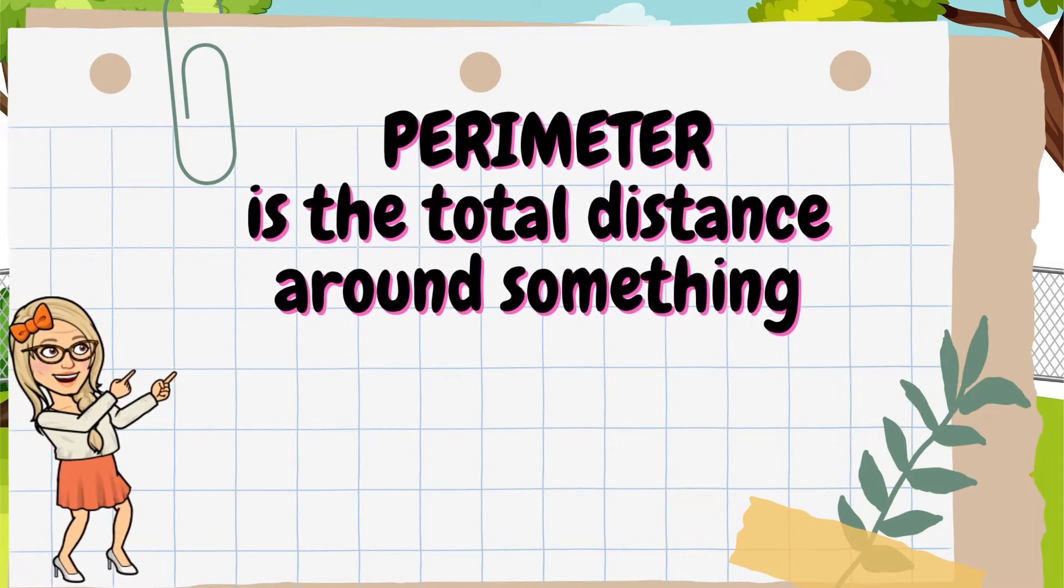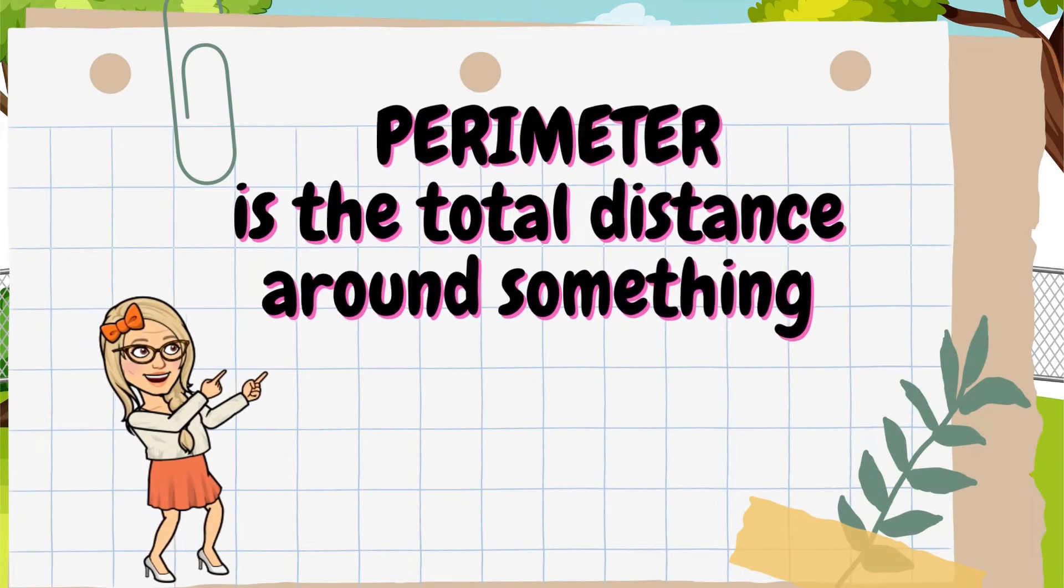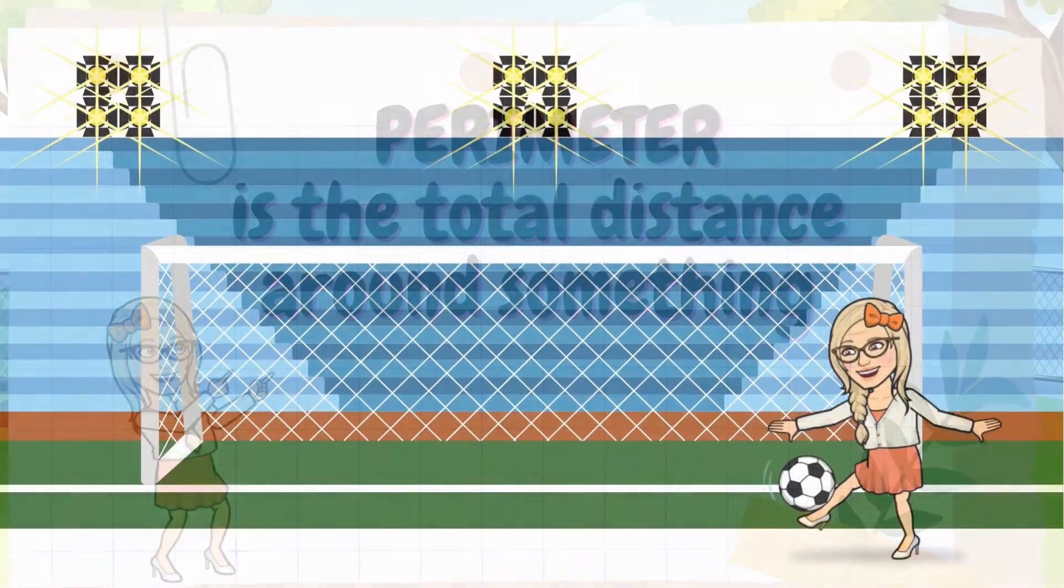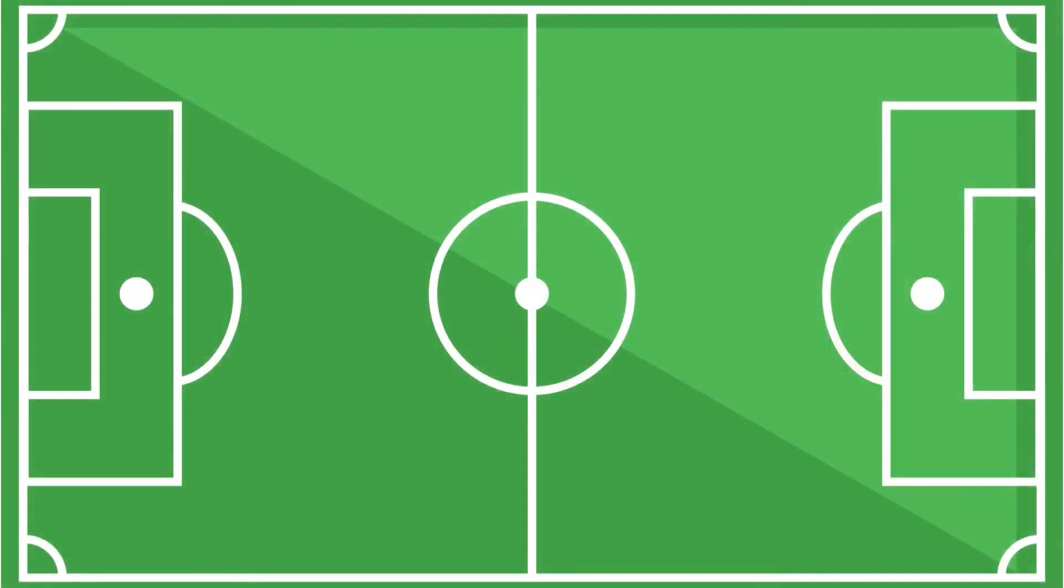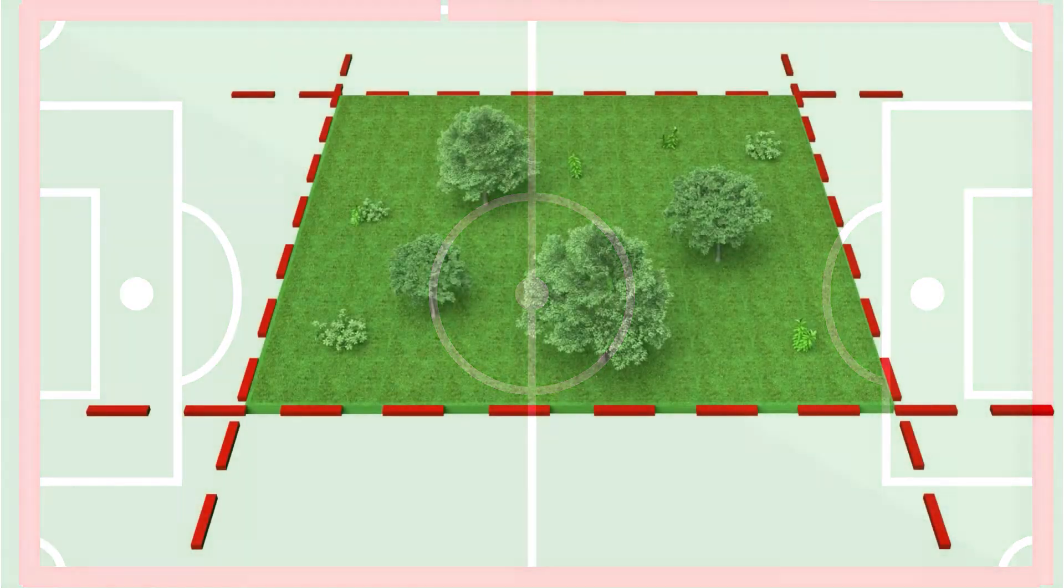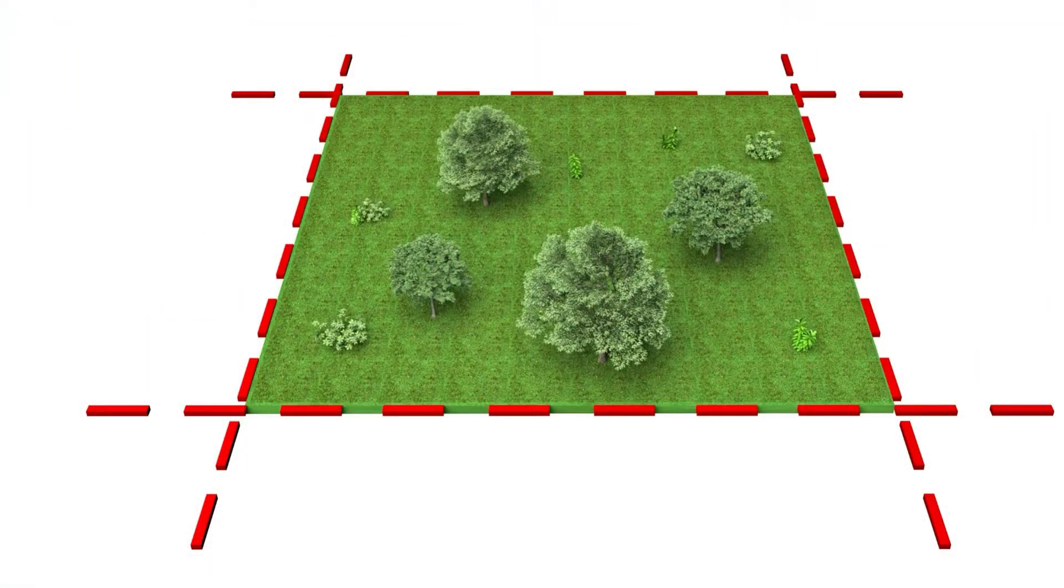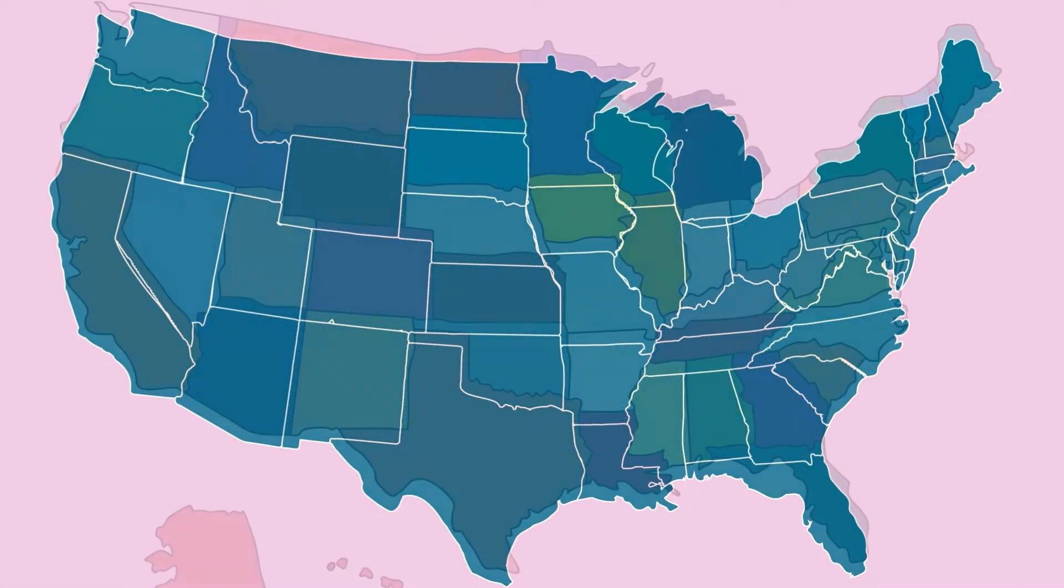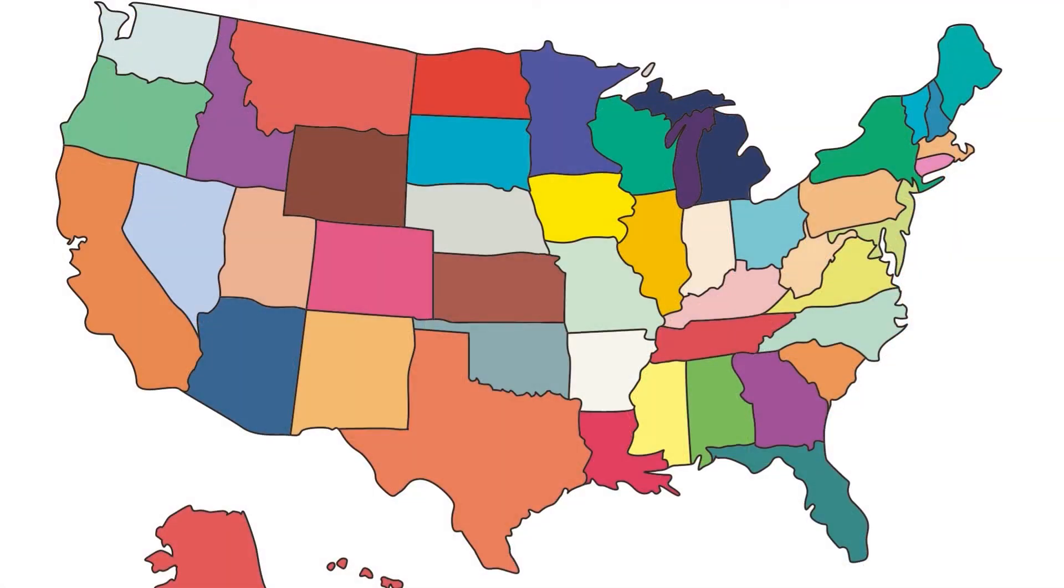The perimeter is the total distance around something. We can think of the perimeter as an outline around something. The lines in the grass show the perimeter of the soccer field. These dotted lines show the perimeter of this piece of land. The map shows the perimeter of each state.